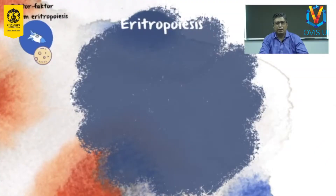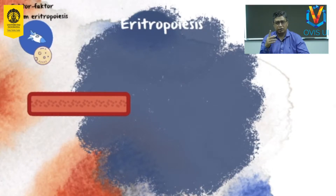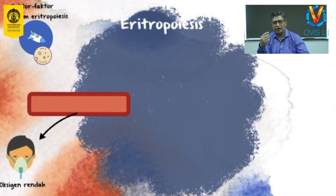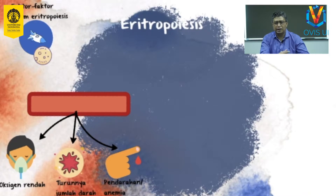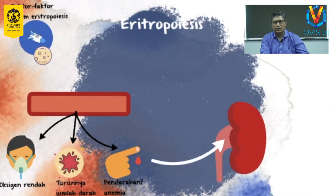Setelah kita memahami perkembangan eritropoiesis dari saat usia gestasi hingga usia lanjut, kini kita akan membahas lebih detail tentang proses pembuatan sel darah merah itu sendiri atau eritropoiesis. Beberapa keadaan akan mempengaruhi produksi dari sel darah merah, seperti saat kadar oksigen rendah di jaringan tubuh, adanya penurunan jumlah darah, adanya kehilangan darah karena perdarahan, atau pada keadaan anemia. Keadaan ini akan menstimulasi ginjal untuk memproduksi dan melepaskan eritropoitin.